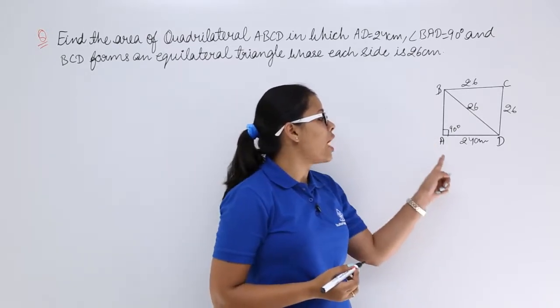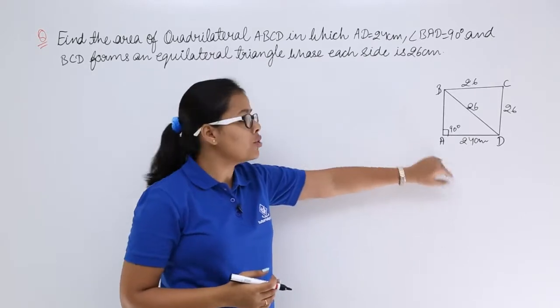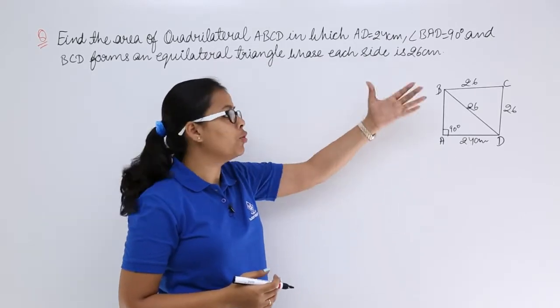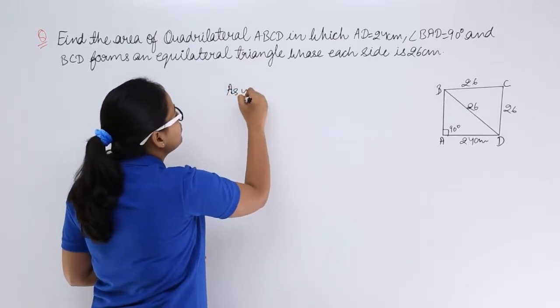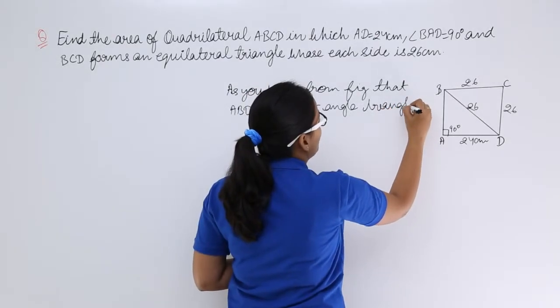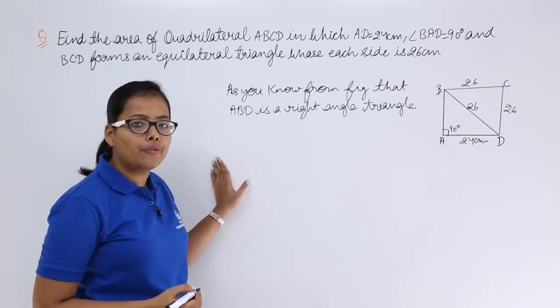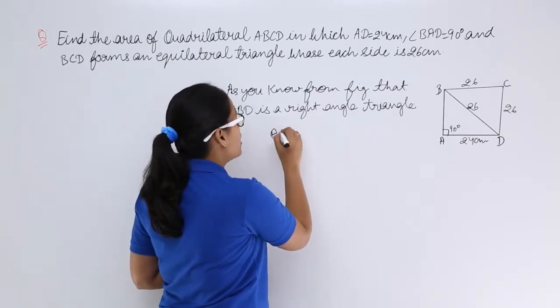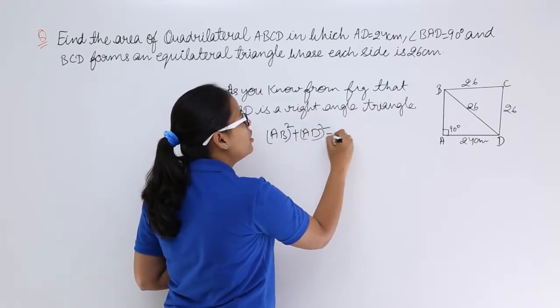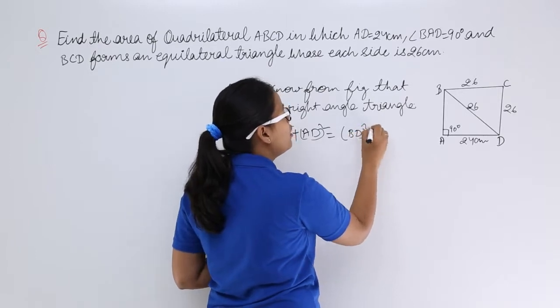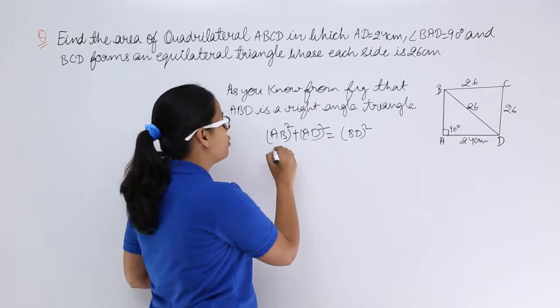Now you know that this triangle BAD is a right angle triangle so using Pythagorean theorem you can easily find out this value AB which you may suppose is the height. So when this is a right angle triangle you are going to find out the value for the side AB using Pythagorean theorem AB square plus AD square is equal to the square of hypotenuse which is BD. Now you know the value for AD as well as the value for BD, let's put those values here.